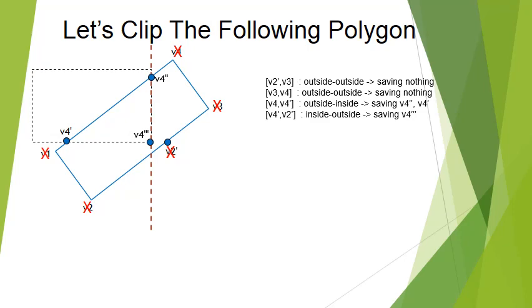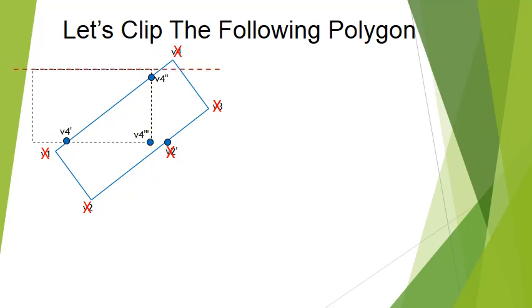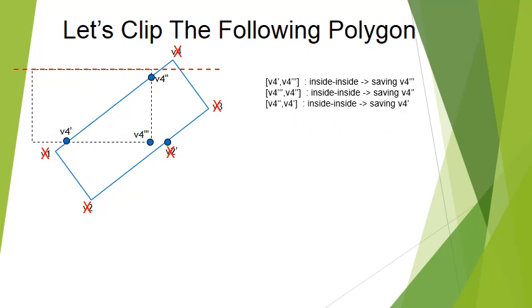Let's continue to the top clipper. The first pair, v4 dash and v4 triple-dash — both inside, so we save v4 triple-dash. Next, v4 triple-dash and v4 double-dash — inside and inside, saving the second one. The last pair, v4 double-dash and v4 dash — both inside, saving v4 dash. The top clipper didn't discard any of them and didn't create any new vertex.